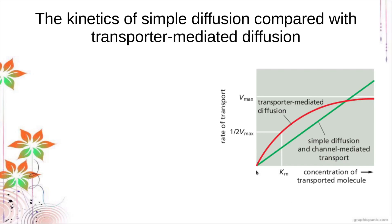For simple diffusion, you have this linear relationship with the concentration of the transported molecule. The transporter-mediated diffusion is actually able to transport a large amount of molecules even at lower concentrations compared to simple diffusion. Although they have a break-even point where, at a certain concentration, both the transporter-mediated diffusion and the passive diffusion seem to be equal.